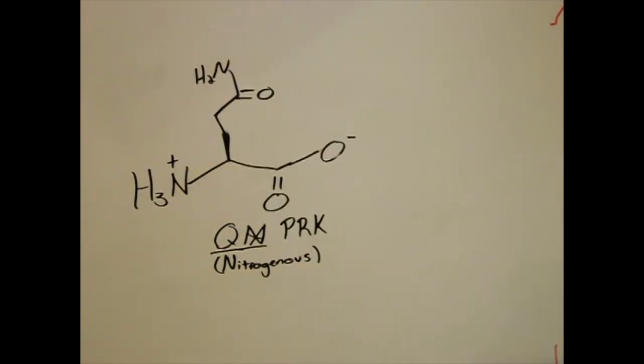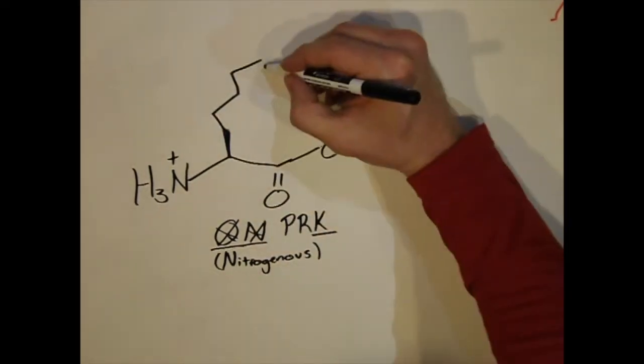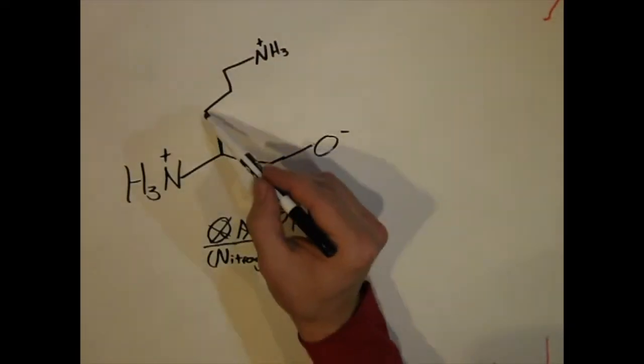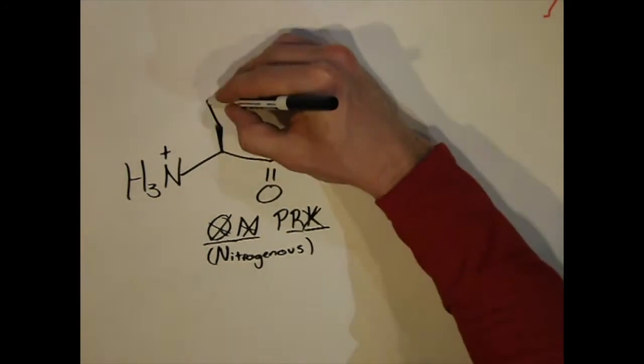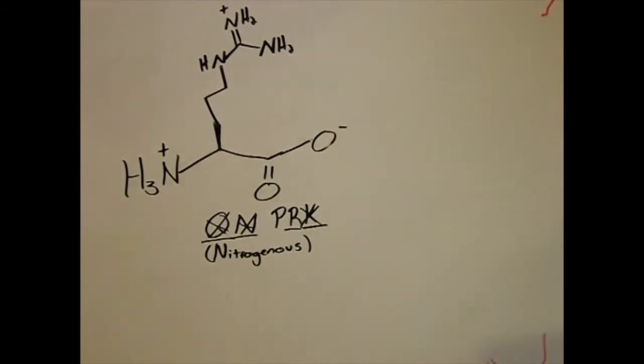Next is lysine. Lysine is three carbons followed by an amine. Next we have arginine. Arginine has two carbons followed by three nitrogen groups including an amine.